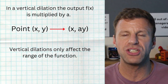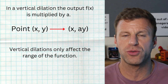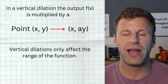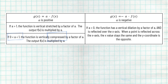So we have dilations of stretching versus shrinking. If your a value is greater than one, that's going to stretch the graph. If your a value is between zero and one, that's going to compress or shrink the graph, multiplying by that a value.